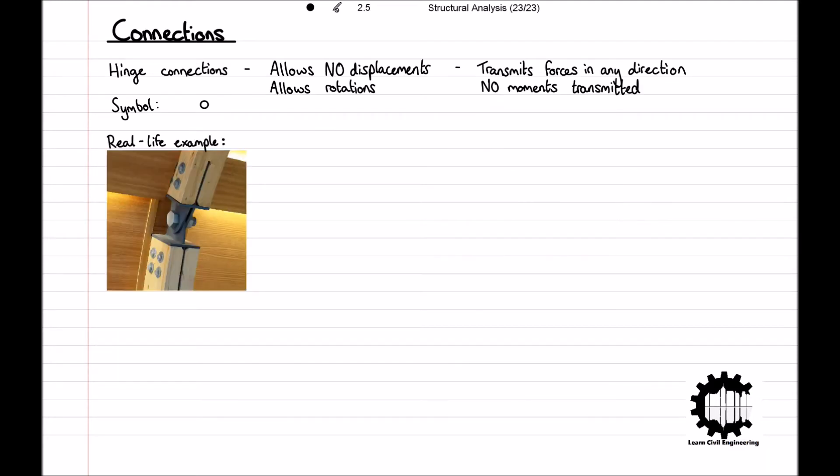This is a real life example of a beam to beam hinge support. The beams are connected such that no displacement can occur, however they can rotate. Using the symbol for a hinge support, this example can be simply modelled like so.